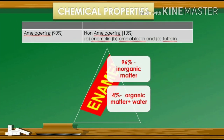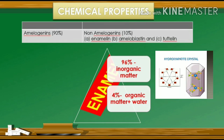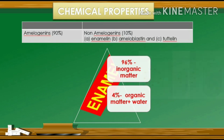Regarding chemical properties, enamel is composed of both inorganic and organic substances. It contains by weight 96% inorganic matter and 4% organic matter and water. The inorganic content is mainly hydroxyapatite crystal, present at 92 to 98% by volume of the total inorganic content.